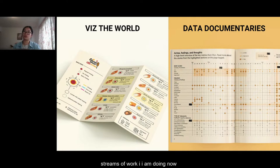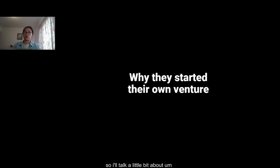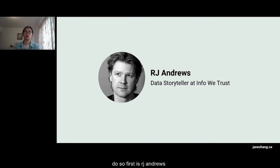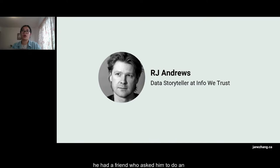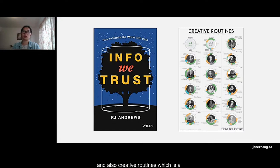RJ Andrews is a data storyteller at InfoWeTrust. He started doing freelance graphic design and marketing work. A friend asked him to do an ambitious data story project, and he published it online — that's when he created the InfoWeTrust website. You probably know him from InfoWeTrust, the book he wrote, and Creative Routines, a very popular piece of work. The key lesson is it's important to show the work you do. In summer 2015, he got two unsolicited job offers worth $30,000 and $20,000 — signals to 'forget working for a big company, keep chasing this dragon.'